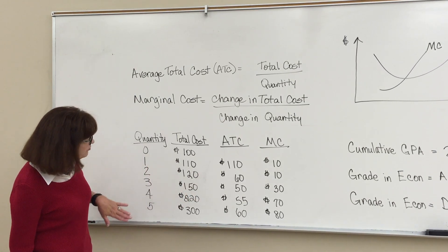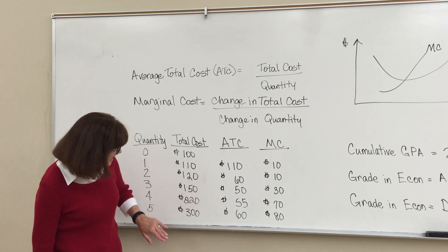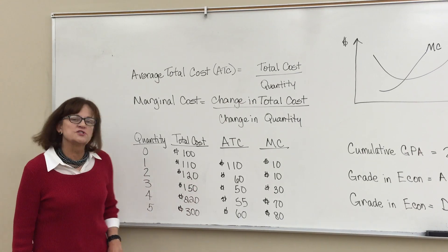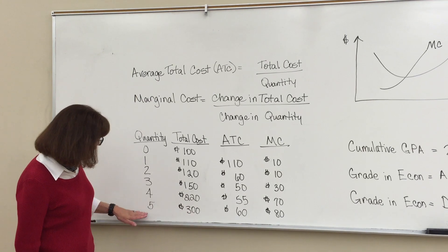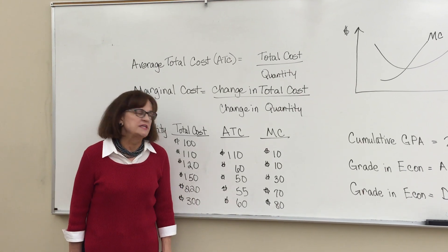The average total cost when you make four units is 55. And the average total cost of producing five units is a total cost of 300 divided by five or $60 per unit.